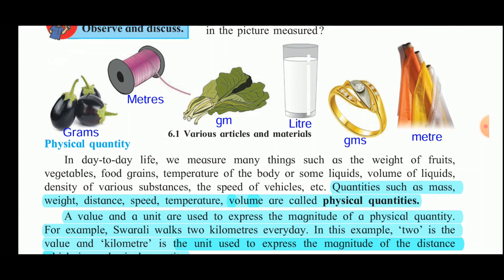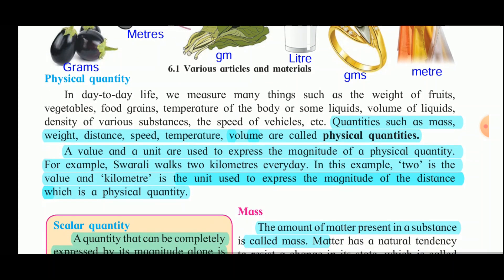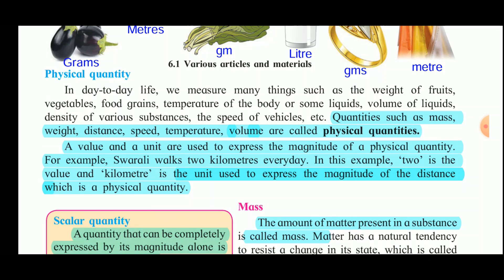In day-to-day life we measure many things such as weight of fruits, vegetables, food grains, temperature of the body or liquids, volume of liquids, density of various substances, and the speed of vehicles. Quantities such as mass, weight, distance, speed, temperature, and volume are called physical quantities. When we measure a quantity, we use a value and a unit to express the magnitude of the physical quantity. For example, Swarali walks two kilometers every day — here two is the value and kilometer is the unit.